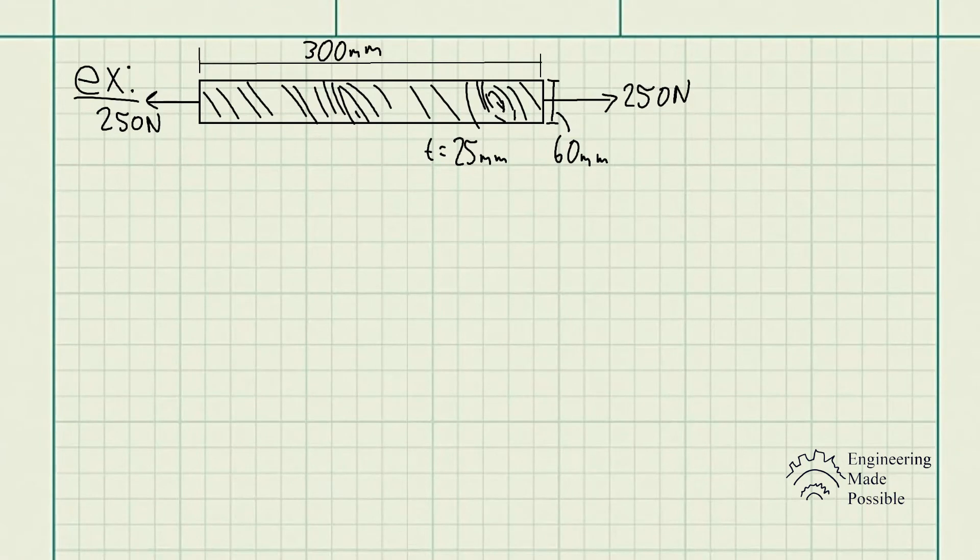For this problem statement, we have the grains of wood in the board make an angle of 20 degrees with the horizontal as shown. Determine the normal and shear stress that act perpendicular and parallel to the grains if the board is subjected to an axial load of 250 newtons. This is a very practical application of plane stress transformations.